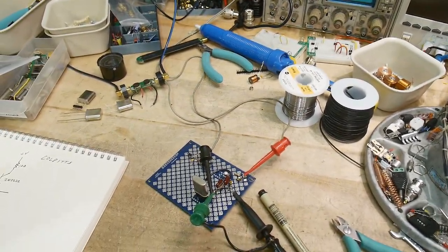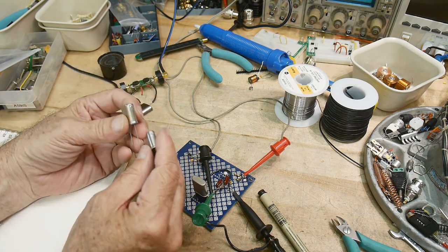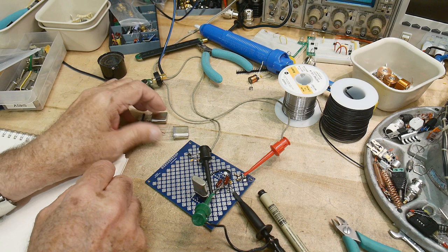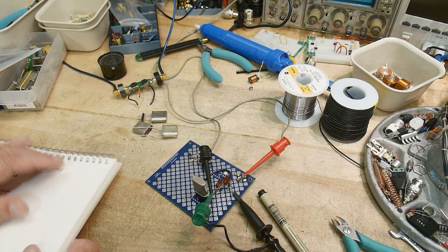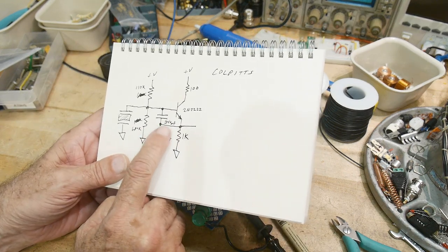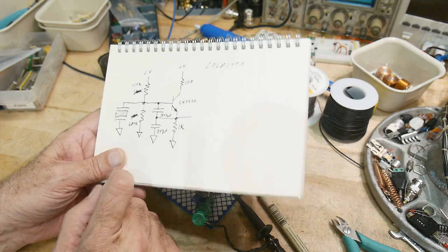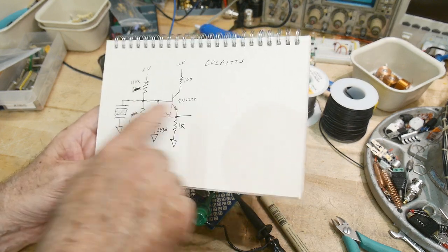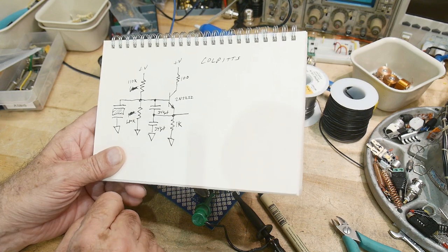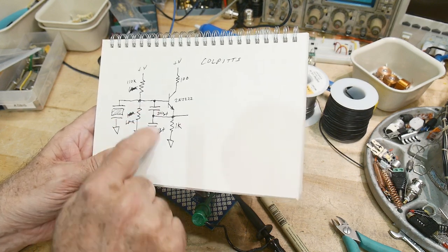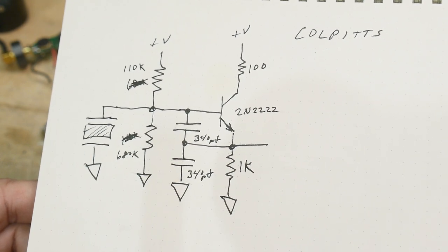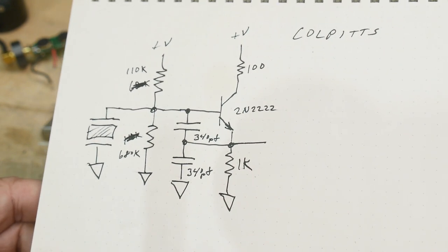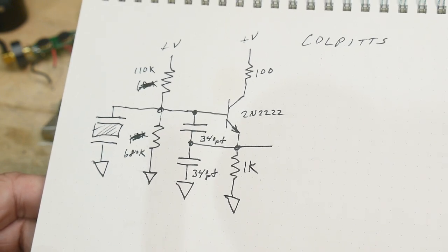These big crystals have to be driven with a fairly slow circuit. I have these 340 picofarad capacitors here. A fancy 10 megahertz version of this, these would probably be around 20 picofarads instead of 340 picofarads. You need to make these bigger for your slow crystals. Back in the day, a couple megahertz was fast. Your 8080 was only running at a megahertz.